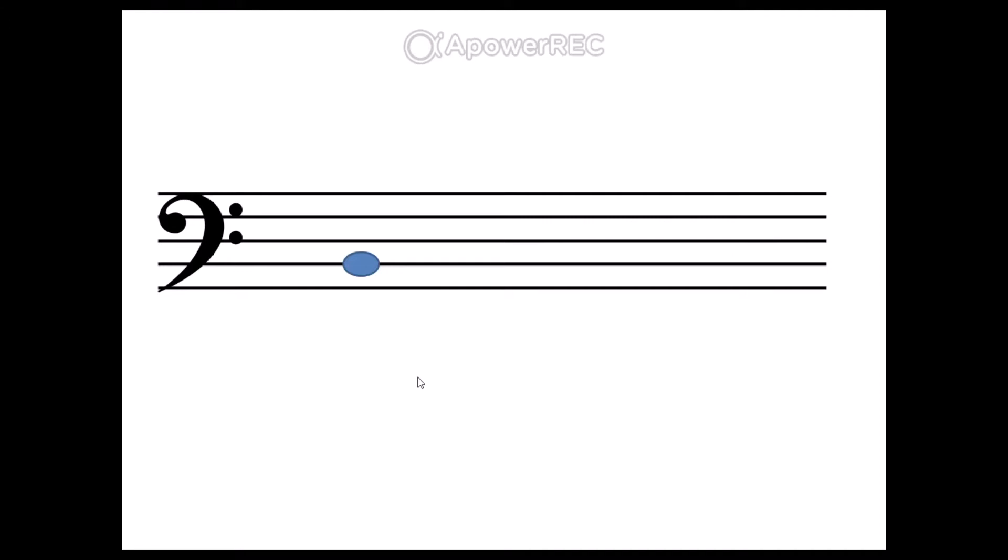This note has a line slicing through the middle, so we know we're going to be using the rhyme for the lines. We're going to start from the bottom and we're going to count up. This note is on the second line up, so in our rhyme we say Granny's Boots, and we can tell that this note is a B because the word Boots begins with B.